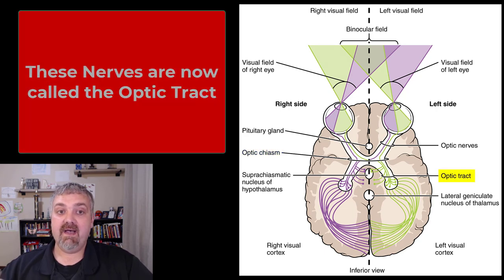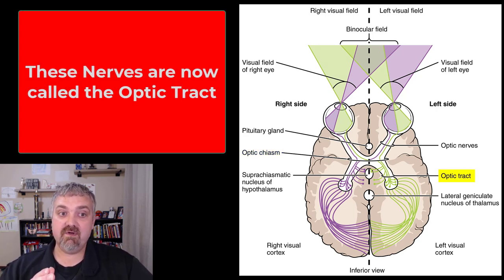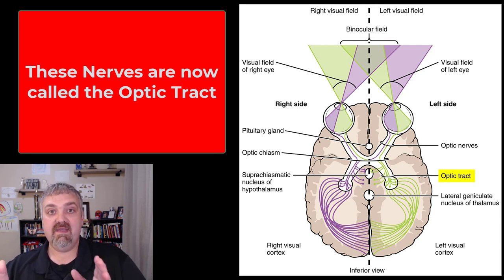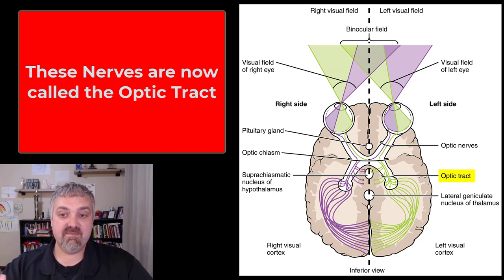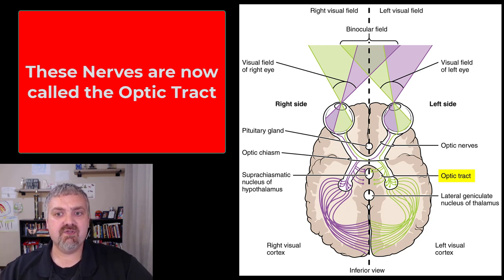The optic nerve travels to the optic chiasm, which is in the diencephalon. At the optic chiasm, only some of the nerves cross — they don't all cross. After the optic chiasm, these bundles of neurons are now called the optic tract. This has to do with the fact that the word 'nerve' is used with the peripheral nervous system, and 'tract' with the central nervous system.